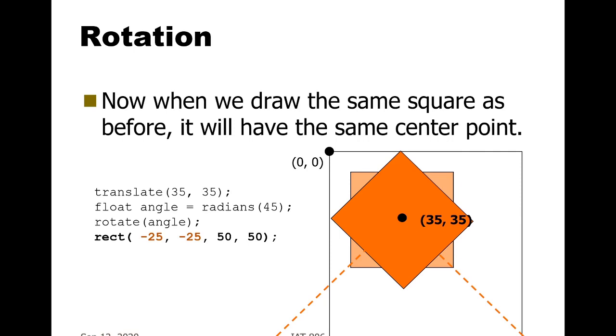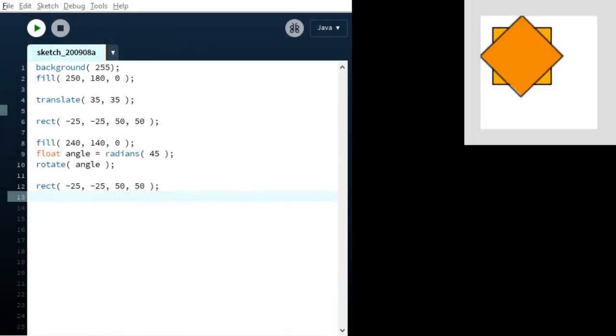So now let's see what that looks like in the Processing window. I've not shown the first rectangle call where it's drawn at the origin. But instead, I've just done translate followed by rect minus 25, minus 25. That's showing the lighter orange rectangle that you see behind in the drawing area. Filled with a new color, rotated by 45 degrees, turned that into radians.